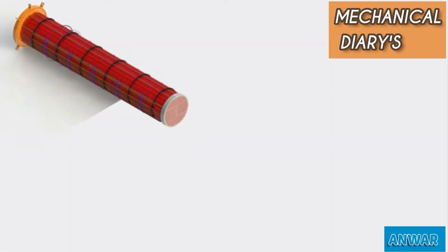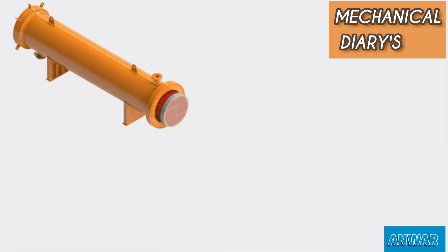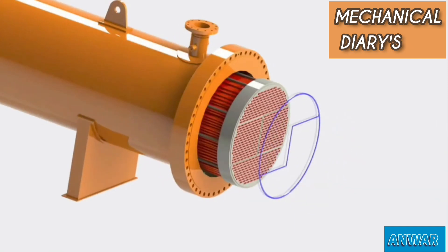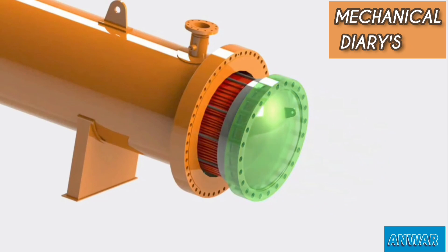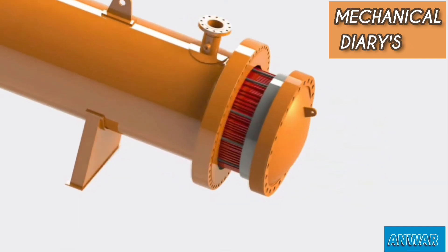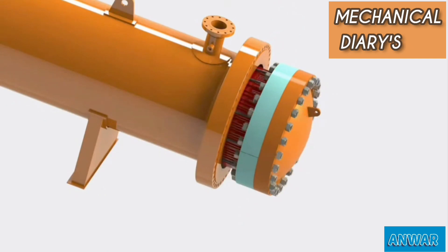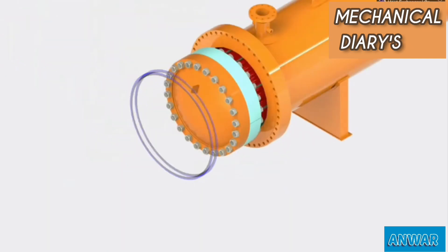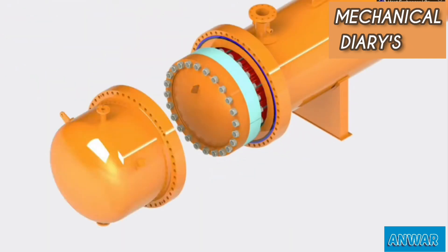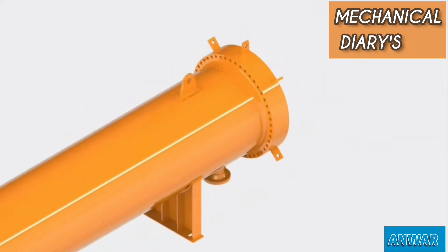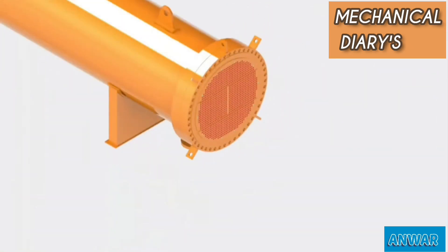Next is a short video about the gasket pressing area. The first gasket shown is tube sheet to shell. The second gasket is the floating head gasket — it attaches the tube sheet to the floating head. This is called the floating head gasket. Then you can fix the bolts and tighten. The third gasket is the shell back cover gasket, and the fourth is tube sheet to channel head.